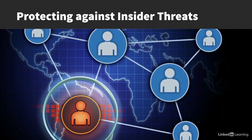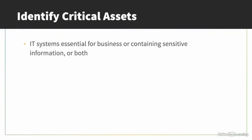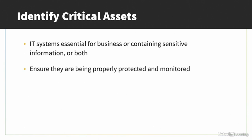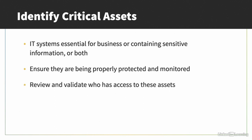Insider threats can be dangerous and hard to detect. First, take the time to identify the critical assets in your organization — the IT systems that are essential for operations, have the most sensitive information, or both. When you identify the critical assets, ensure they are being properly protected and monitored. Also, review and validate who has access to these assets. Confirm that everyone who has access really needs that access. It's a good idea to conduct these asset access reviews on a regular basis.